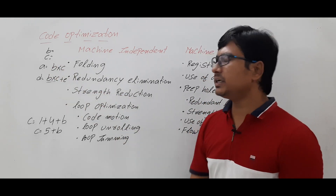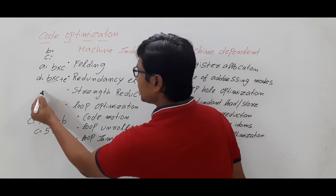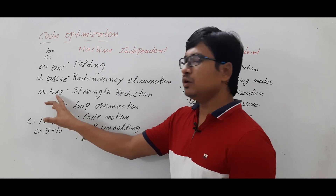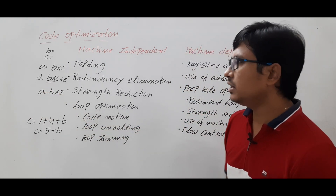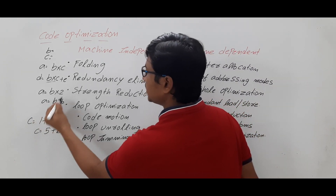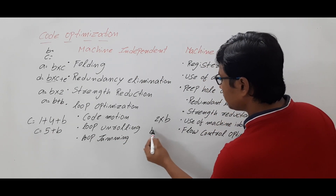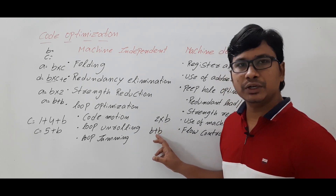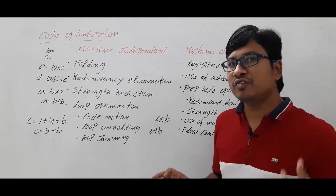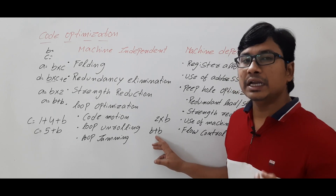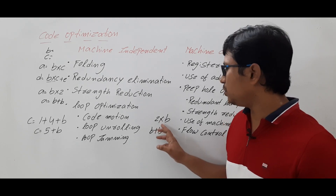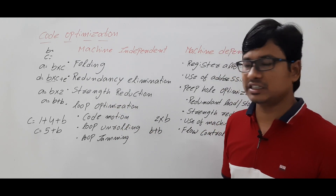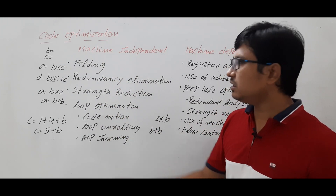This is what we call redundancy elimination — if you have already computed B*C, use that value instead of computing it again. Now let me discuss strength reduction. Suppose you have A = B * 2. Instead of writing that, you can write A = B + B. Multiplication is a costly operation compared to addition, meaning multiplication takes more clock cycles than addition. So if you can perform the same operation using addition instead of multiplication, you do strength reduction.